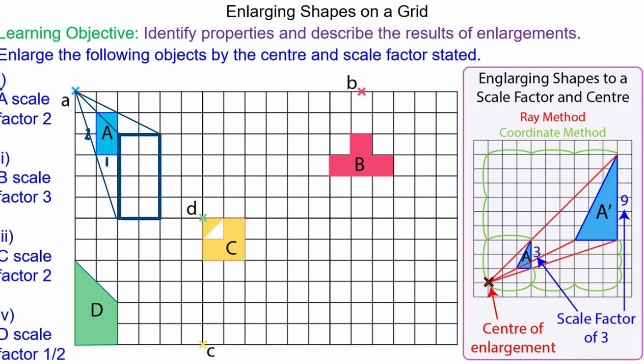We can check that we are right because the object has a base of 1 and in the image it has a base of 2, and in the object it's got a height of 2 and in the image it's got a height of 4.